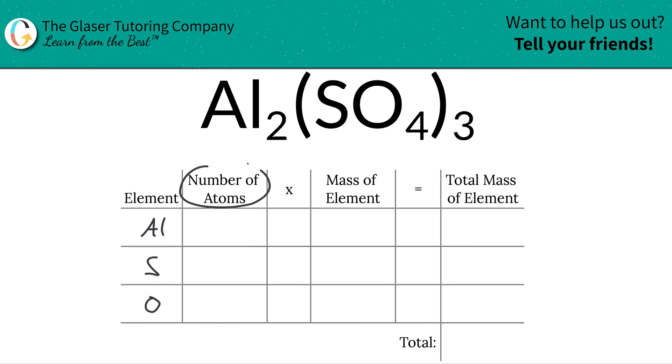Next is to write the number of atoms of each in this compound. That's where the subscripts come into play. At the bottom of aluminum, there is a 2, which means that there are 2 aluminum.